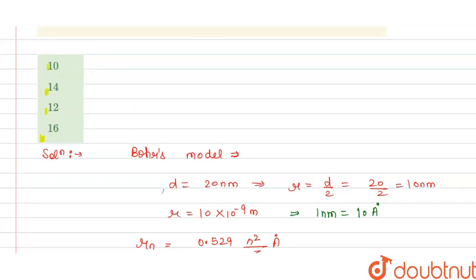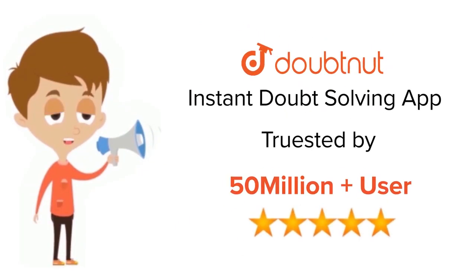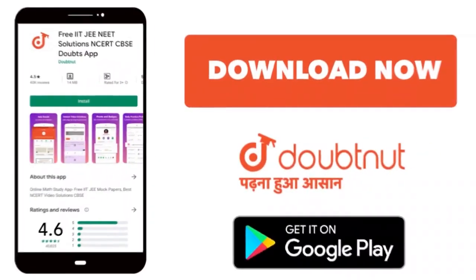Now we check which option is correct. Option B is correct. Thank you. For class 6 to 12, IIT JEE and NEET level, trusted by more than 5 crore students, download Doubtnut app today.